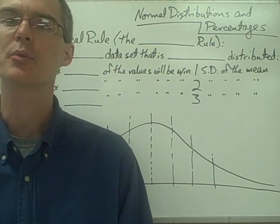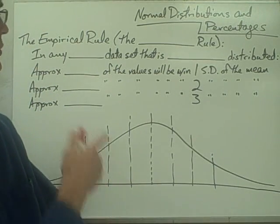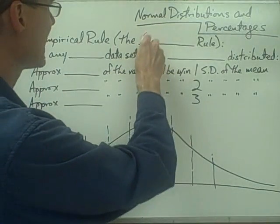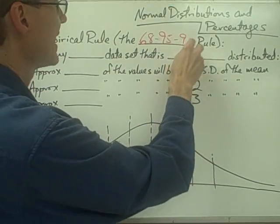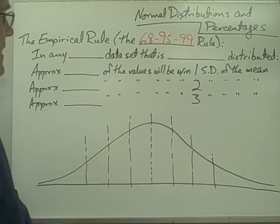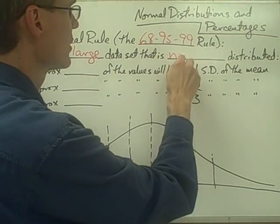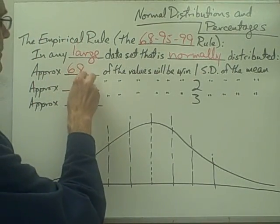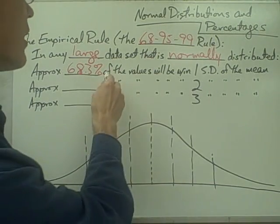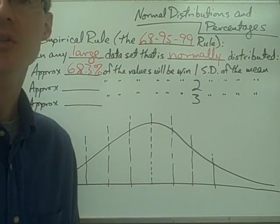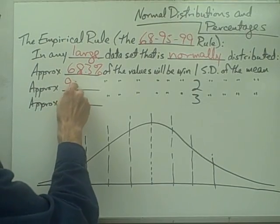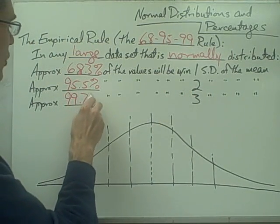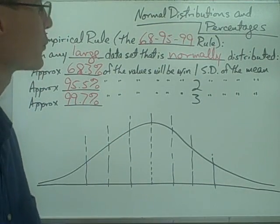This video is on normal distributions and percentages. We're going to talk about something called the empirical rule, also sometimes called the 68-95-99 rule. The empirical rule says that in any large data set that is normally distributed, approximately 68.3% of all data values will be within one standard deviation of the mean, 95.5% within two standard deviations, and approximately 99.7% within three standard deviations of the mean.